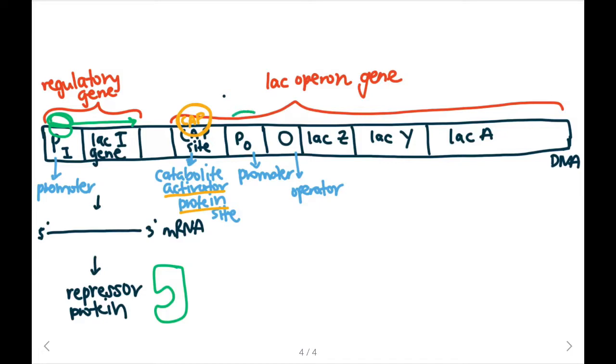So RNA polymerase is going to bind to our promoter. And it's then going to transcribe the lac Z, lac Y, and lac A genes. We're also going to have the operator where the repressor will bind if it's present. And when the repressor binds, it's going to block the RNA polymerase from transcribing.